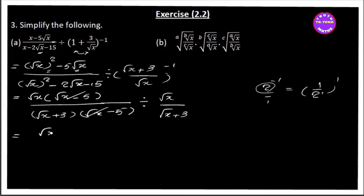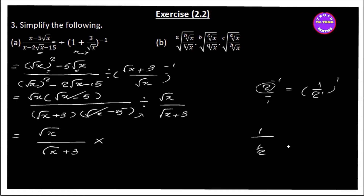So this is power 2. (√x + 3) is power 2 in the first part divided, and the second part is 1 by 2. The second part is important. It's about 1 and 2. So if you divide by 2, you can add: 2 divided into 2. So you get root x plus 3 by root x.